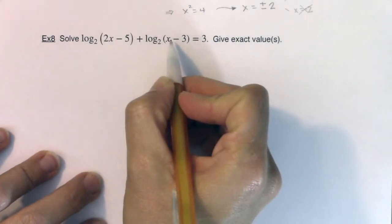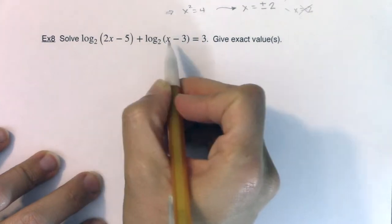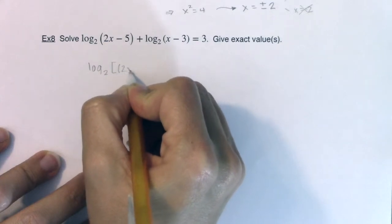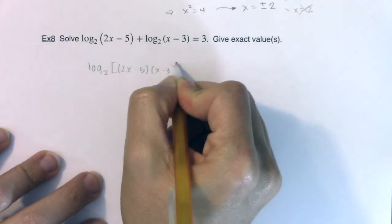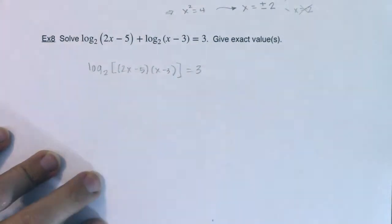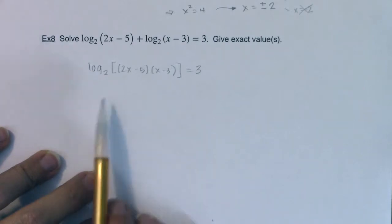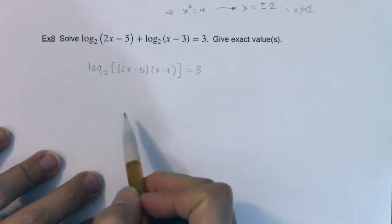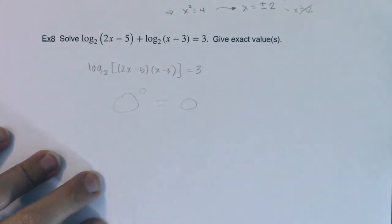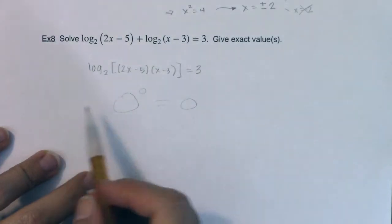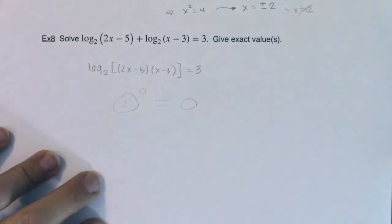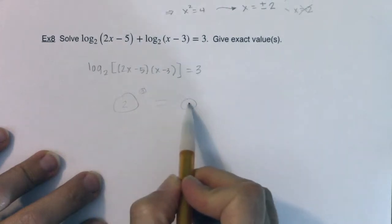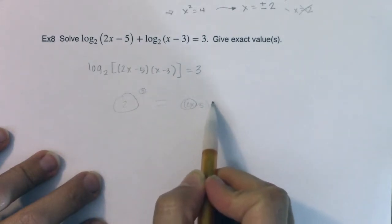Taking a look, I have two logarithms that are being added, so I can use the product property and combine this through multiplication and that will be equal to 3. Now once I have this single logarithm on the left side, I can translate this into the equivalent exponential equation. I know the base of my logarithm is the base of my power, and the logarithm's value is the exponent, so that will be 2 cubed, and that puts the argument over here on the right side of the equation.